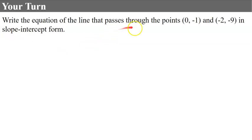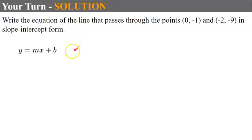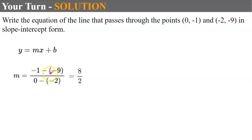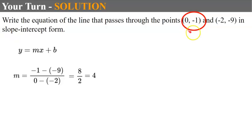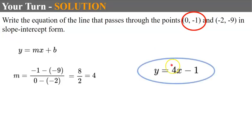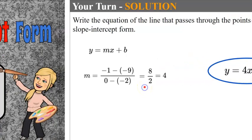Your turn — write the equation of the line that passes through these two points in slope-intercept form. Pause now and come back when done. Welcome back. Finding slope: negative 1 subtract 9 over 0 subtract negative 2 gives negative 10 over 2... wait — negative 1 plus 9 is 8 and 0 plus 2 is 2, so 8 divided by 2 is 4. Slope is 4. Since one point has an x-coordinate of 0, the y-intercept is negative 1. So the equation is y equals 4x subtract 1.